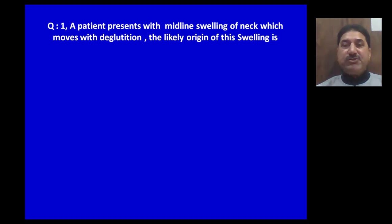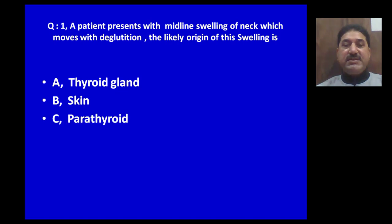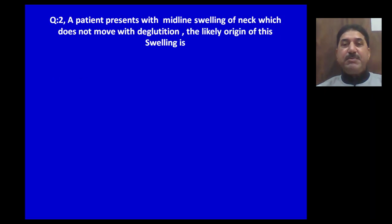Now let us discuss some questions related to this topic. A patient presents with a midline swelling of the neck which does not move with deglutition. The likely origin of this swelling is: A) thyroid gland, B) thyroglossal cyst, C) parathyroid, D) lymph node. A — thyroid gland — is the correct option.